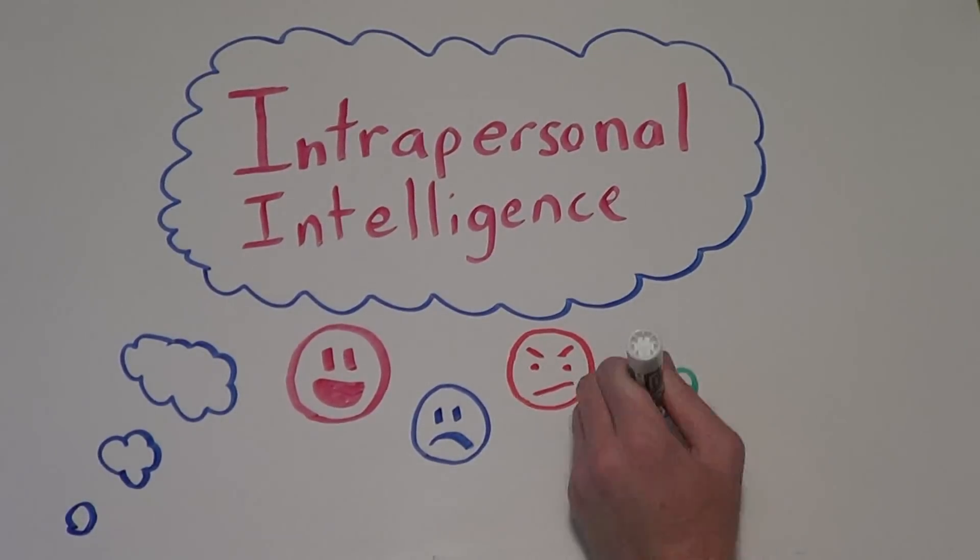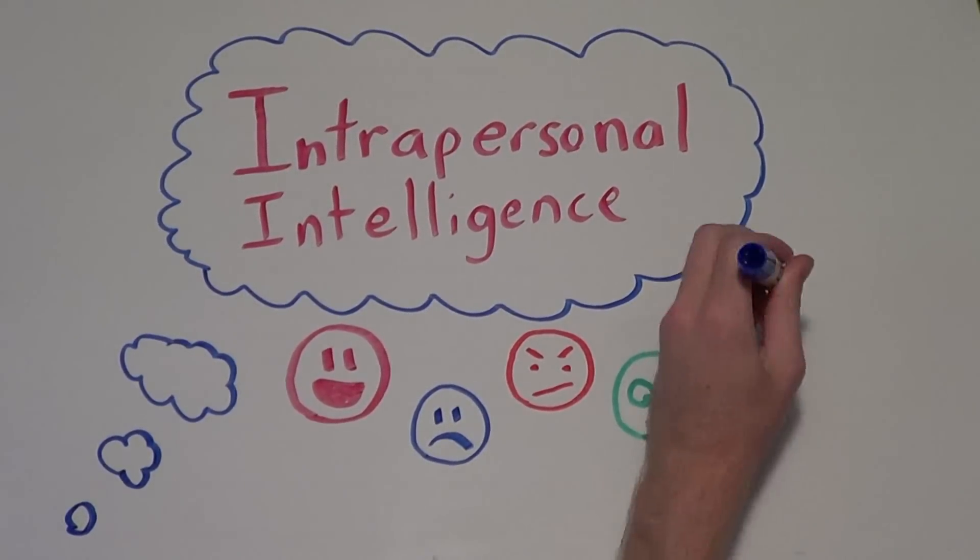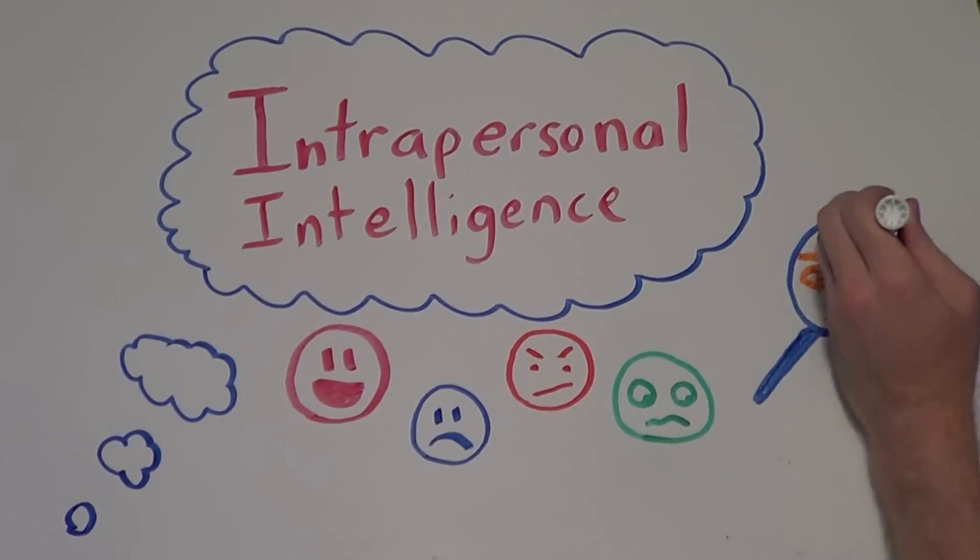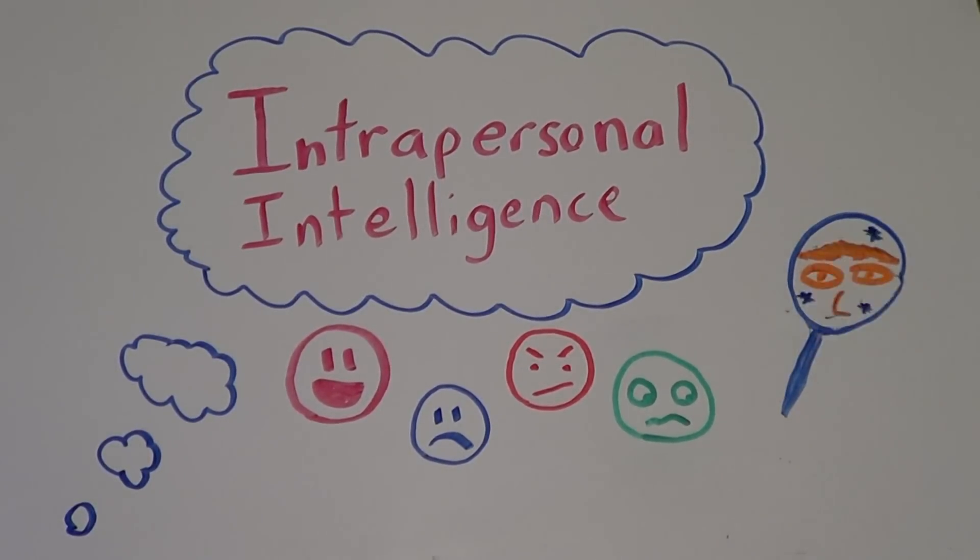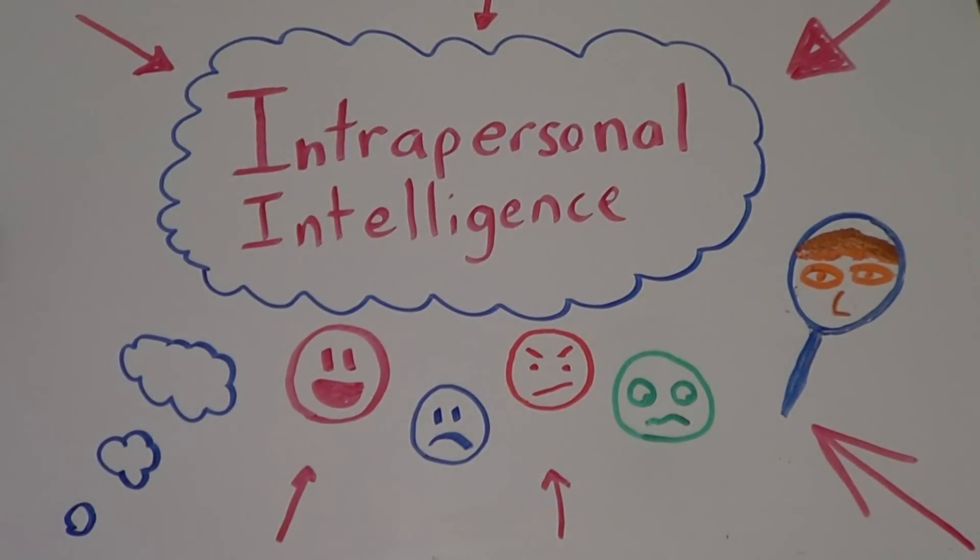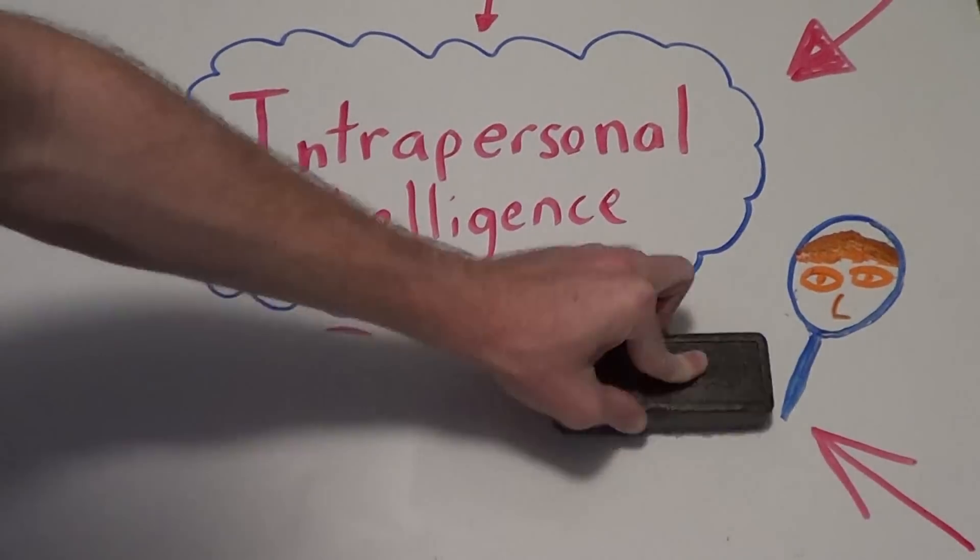Intrapersonal intelligence is the ability to understand one's self and one's thoughts and feelings, and to use such knowledge in planning and directing one's life, which involves not only an appreciation of the self, but also of the human condition. Self-smart people like Plato, Helen Keller, and Bill Gates are very aware of their own feelings and very self-motivated.